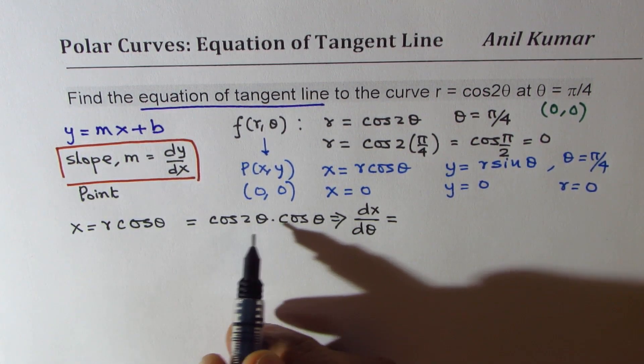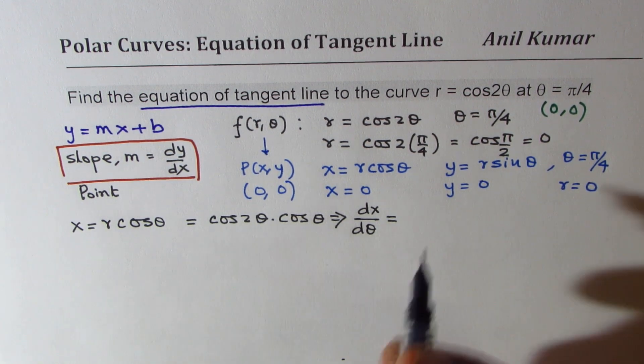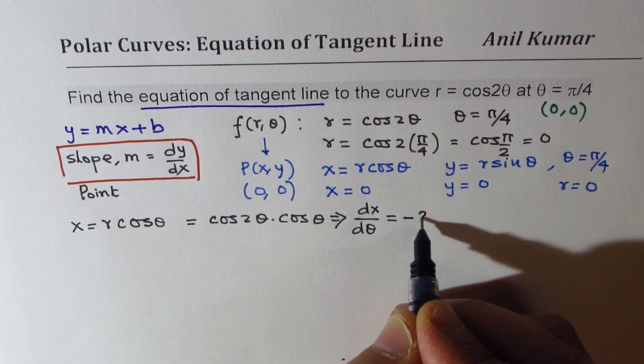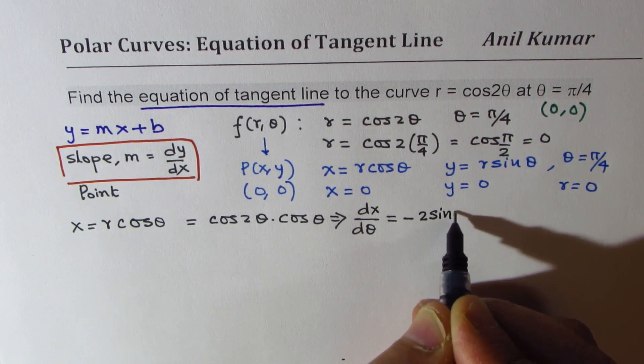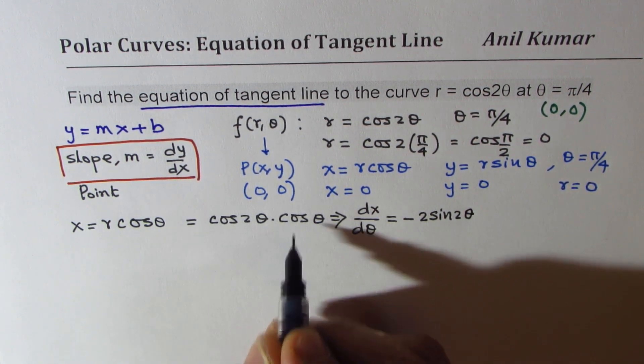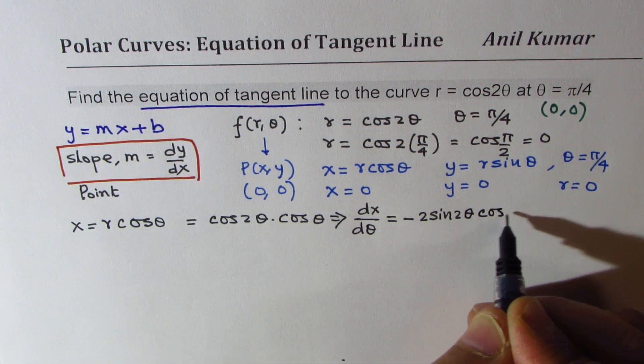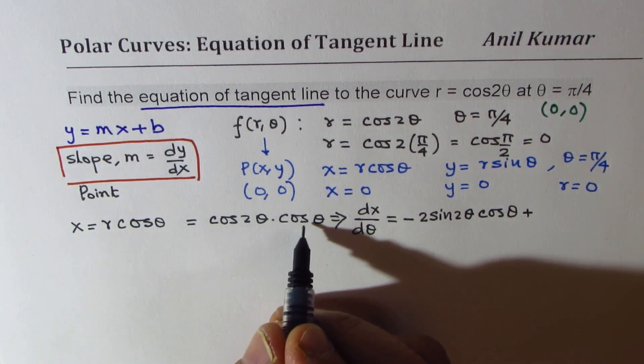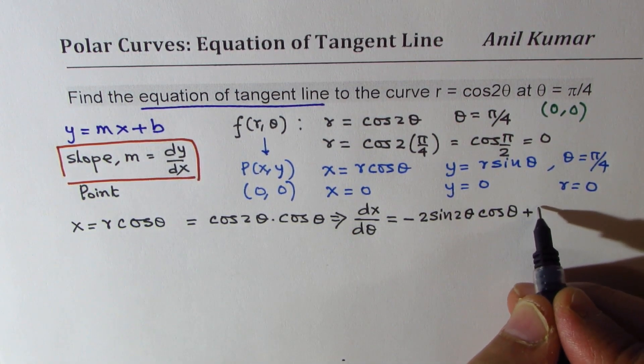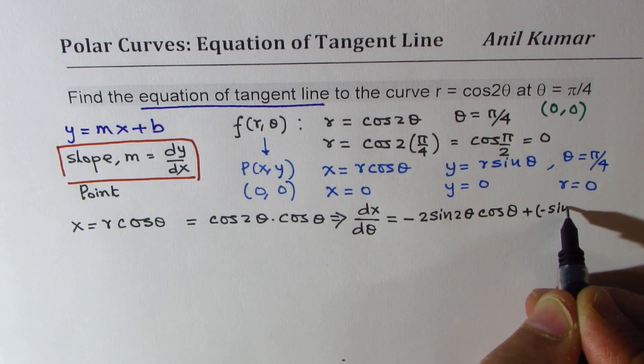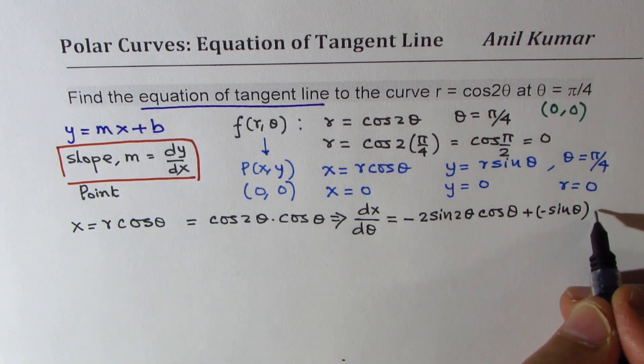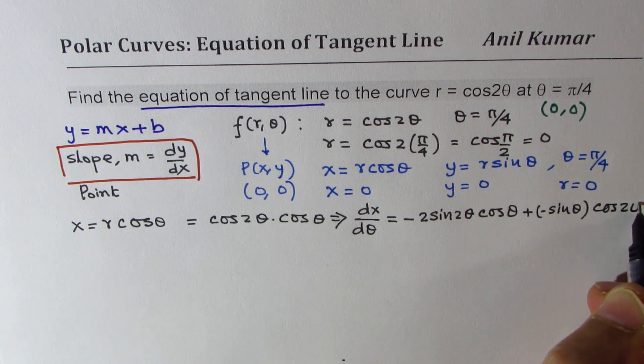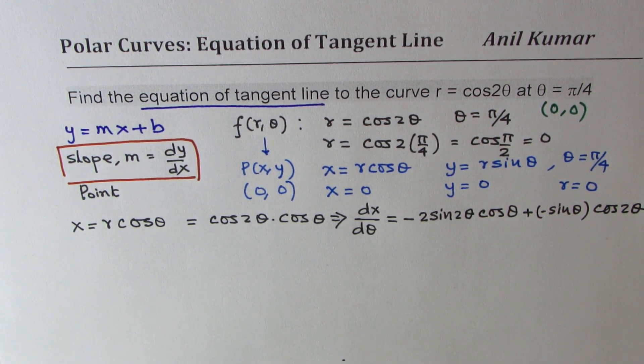Applying the product rule, derivative of cos 2 theta is minus 2 times sin 2 theta times cos theta, plus derivative of cos theta, which is minus sin theta times cos 2 theta. So that is what we get.